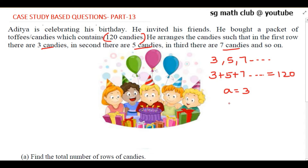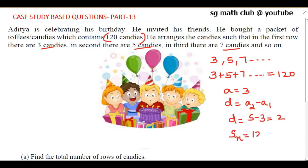Here, a (first term) is 3, common difference d = a₂ - a₁ = 5 - 3 = 2, and the third term is 7. The sum of n terms is given as 120. So this is our data.